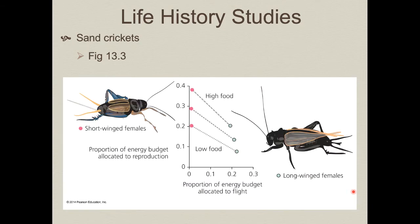In sand crickets, within a population, two different life history strategies exist among different females. Some females put a lot of investment into growing their reproductive capacity at the cost of wing development. Other females may not produce as many eggs when they mature, but they have wings. If the evolutionary goal is to pass on as many genes as possible, the short-wing females appear to have the best strategy — they should out-compete long-winged individuals in terms of fecundity, the number of eggs they can produce.